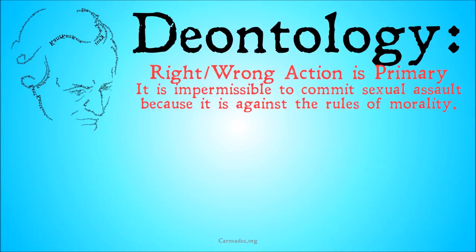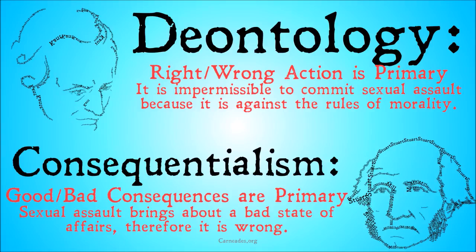So, once again to review: for deontology, right or wrong action is primary — for example, it's impermissible to commit sexual assault because it is against the rules of morality. And for consequentialism, good-bad consequences are primary — sexual assault brings about a bad state of affairs, therefore it is wrong.